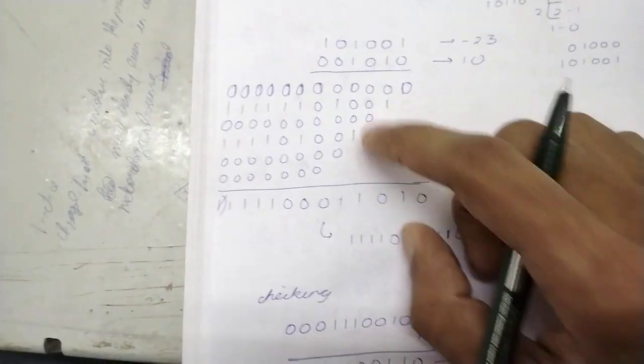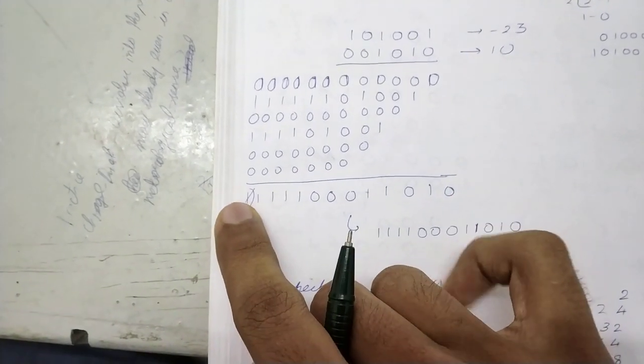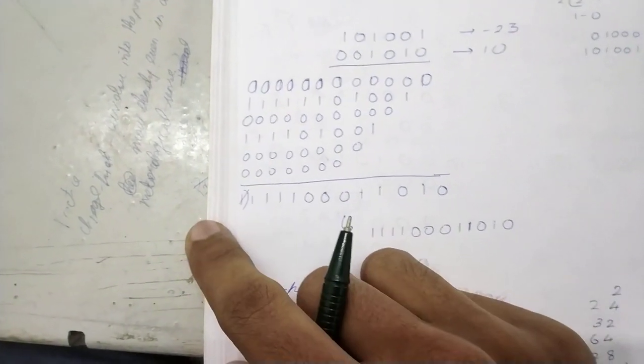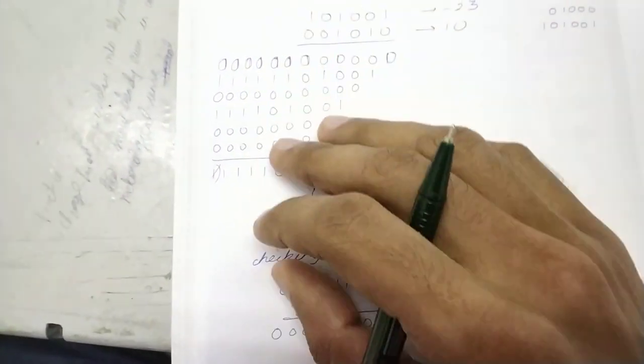0, 1, and so we will add. And when the 12 bits are over, the 13th bit we will neglect. So the answer will come out as this. This is the answer after adding, just addition.